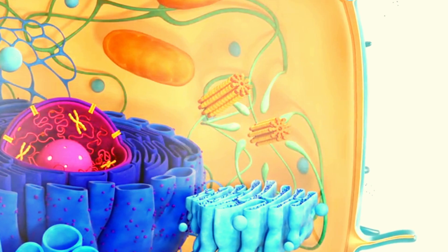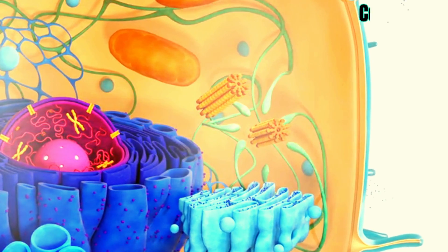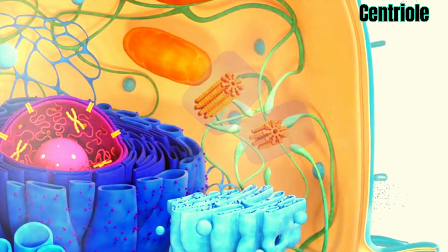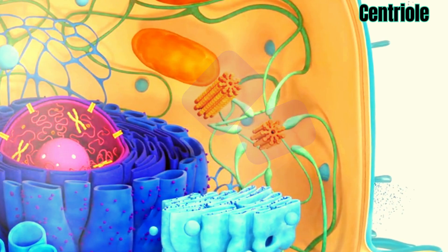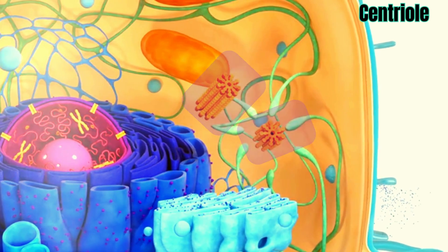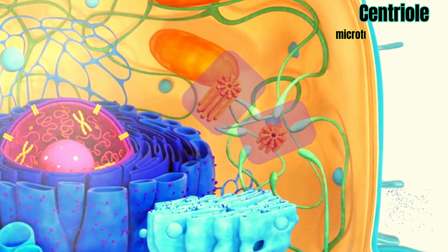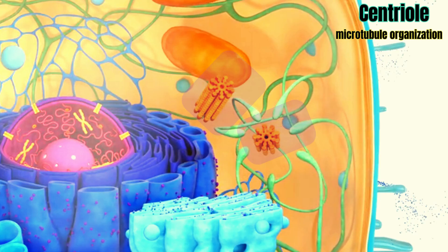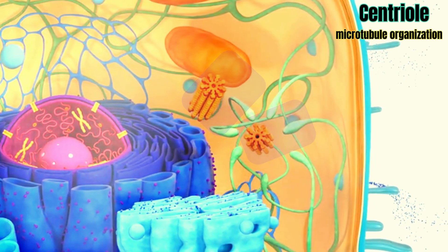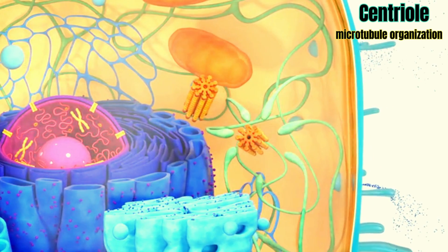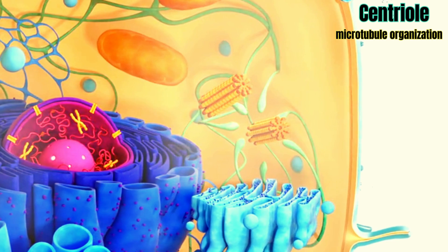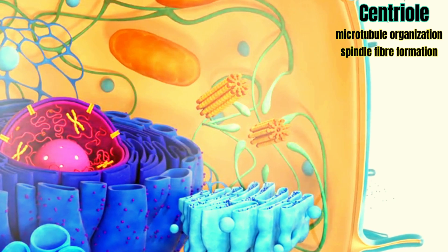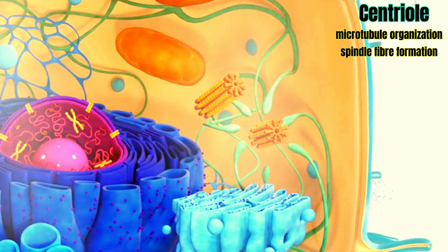Next you can see centrioles — paired barrel-shaped organelles located in the cytoplasm of animal cells, near the nuclear envelope. Centrioles play a role in organizing microtubules that serve as the cell's skeletal system. They are involved in positioning the nucleus and other organelles within the cell, and also in the production of spindle fibers during cell division.